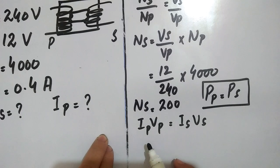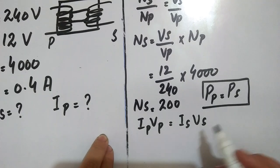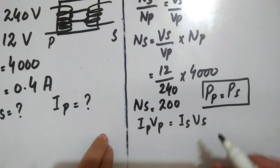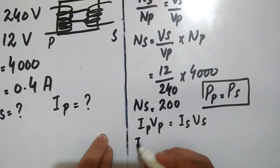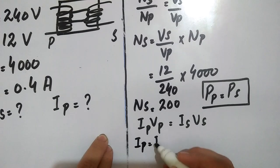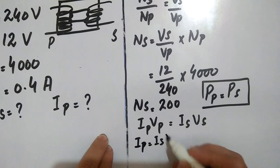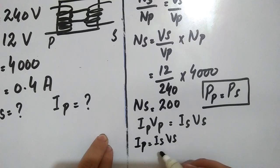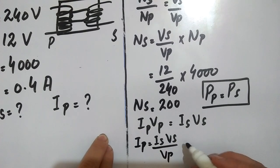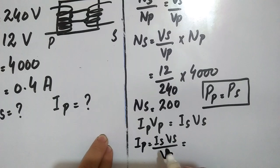Now we have to find Ip. From the power equation Ip × Vp = Is × Vs, we rearrange to get Ip = (Is × Vs) / Vp. Now by putting in the values: